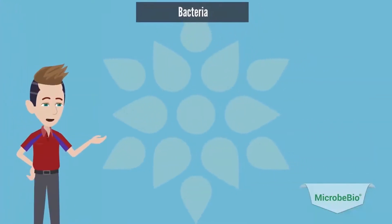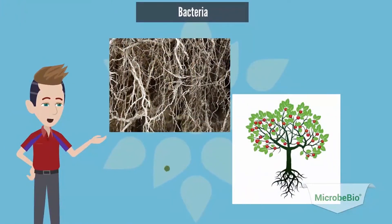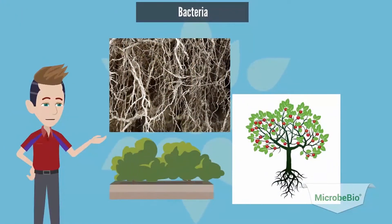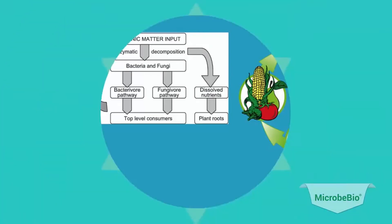Bacteria's function in the symbiotic relationship with the plant's roots is to carry out specific functions. One of these functions is to decompose different organic matters, which are then released for the plant's use when the bacteria's lifespan ceases.